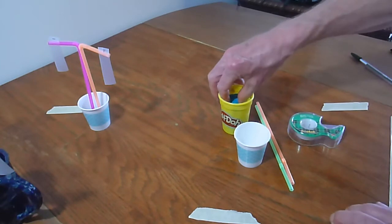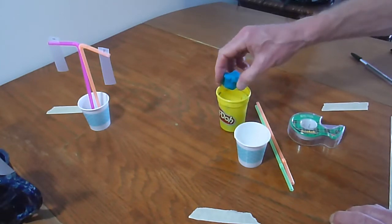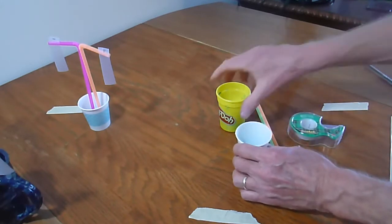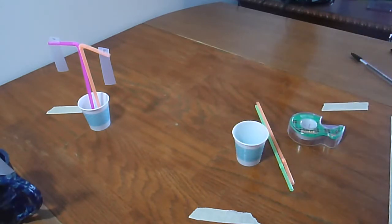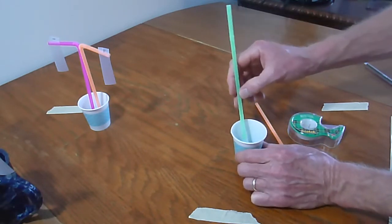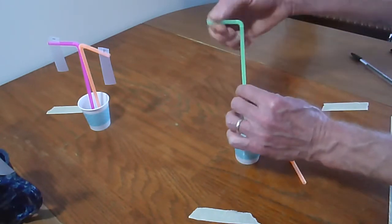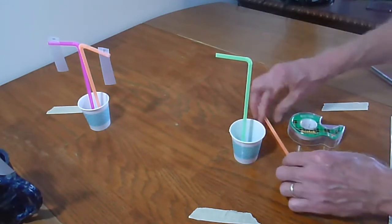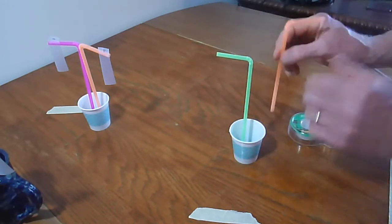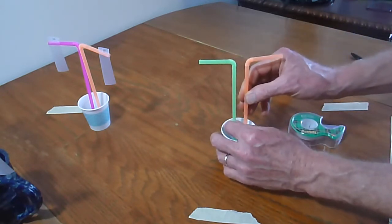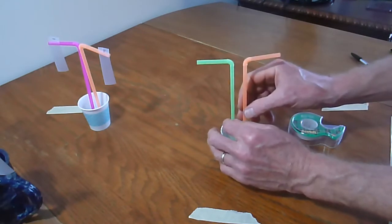Step A says press enough play-doh into a paper cup to fill it halfway. So there is our play-doh. Step B: press the inflexible ends of the two drinking straws into the clay. So this is the end that bends, so you want to stick the other end into the clay and the other one next to it with the arms going out in different directions.